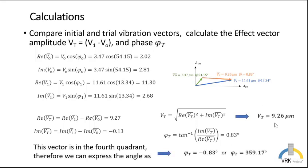As a magnitude, we get that the isolated amplitude of the trail weight is 9.26 microns, and this angle is in the fourth quadrant. Therefore, we can write it as a negative 0.83 degrees or as a positive angle. When we add 360 degrees, then we have 359.17 degrees.